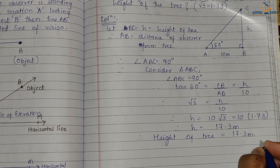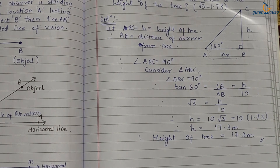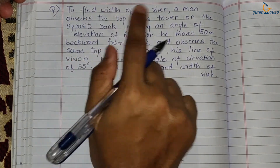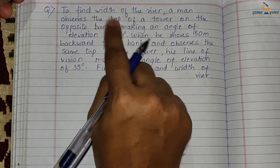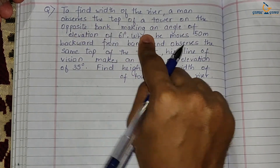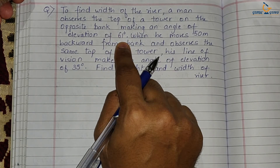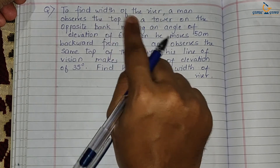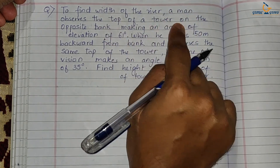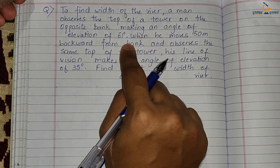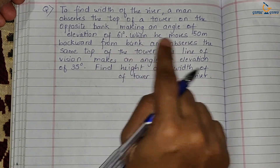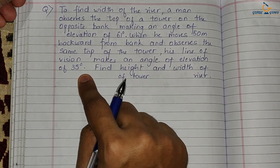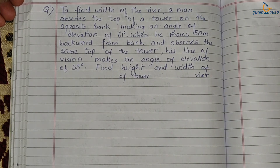Now let us move on to the second question: to find the width of a river, a man observes the top of a tower on the opposite bank making an angle of elevation of 61°. When he moves 50 meters backward from the bank and observes the same top of the tower, his line of vision makes an angle of elevation of 35°. We have to find the height of the tower and the width of the river.